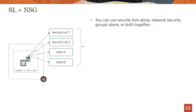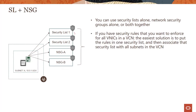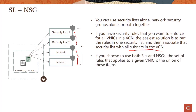You could use security list alone — as we have done in the demos — you could use network security groups alone, or you could use both together. If you want security rules enforced for all VNICs in a VCN, the easiest solution is to put the rules in one security list and associate that security list with all subnets. We did this in a couple of demos — for example, the web host and bastion instance demo where we used the same security rules for simplicity, though in real cases you would separate them.